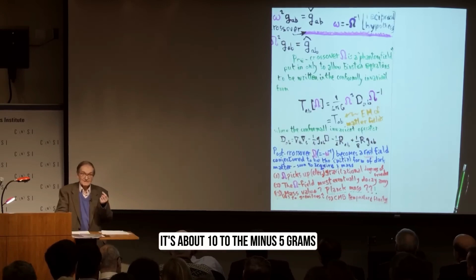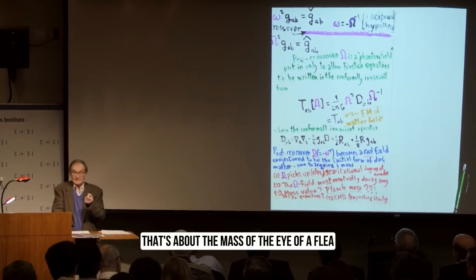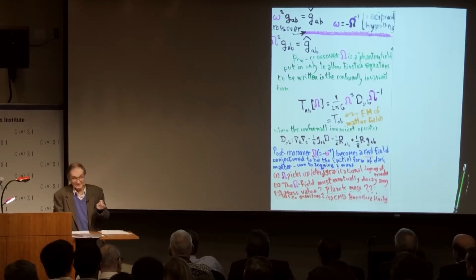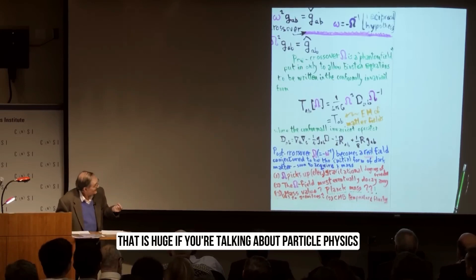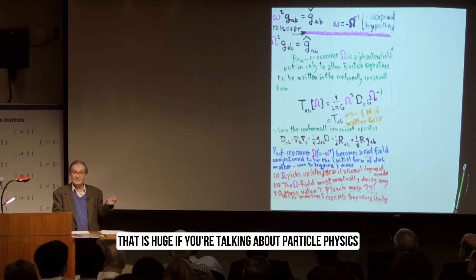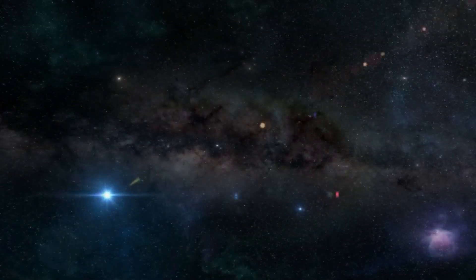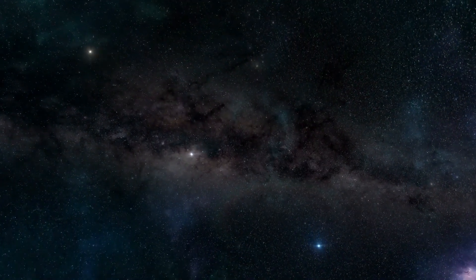How big is the Planck mass? It's about 10 to the minus 5 grams, about the mass of the eye of a flea. That is huge if you're talking about particle physics. Astronomers have come across fresh evidence which challenges the standard model of cosmology.